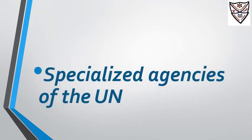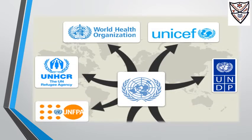Specialized Agencies of the UN: Apart from the six major organs, there are UN agencies which carry out a lot of work all over the world. These include the United Nations Children's Fund, also known as UNICEF; the United Nations Educational, Scientific and Cultural Organization, also known as UNESCO; and the World Health Organization, also known as WHO.